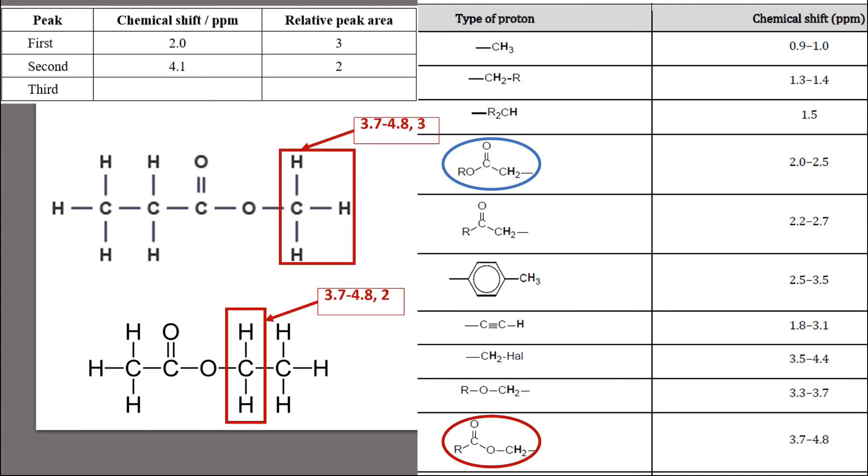The peak at 4.1 ppm, slightly more downfield or more shielded, belongs to the CH bonds next to an ester group. The top isomer should have a relative peak area of 3, while the bottom one 2. So that pretty much confirms that our unknown is actually the bottom isomer.